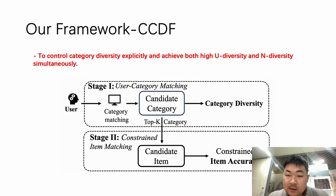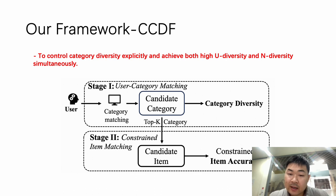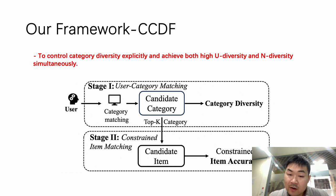Following is our CCDF framework. This two-stage framework equips CCDF with accountability on category diversity by parameter k. If k is small, the retrieved items will be more related to users' historical preference. If k is large, the retrieved items will be more diverse. As a result, the user can access more diversified and novel items with larger k.